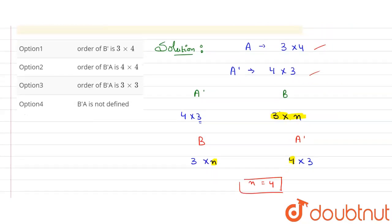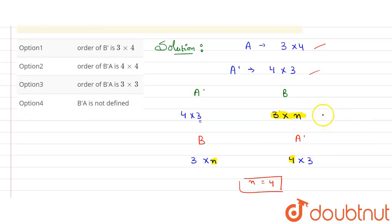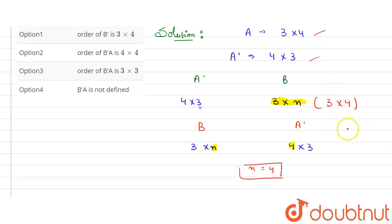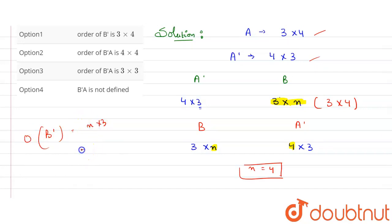The order of B is 3×n, and since n = 4, the order of B is 3×4. Now, the order of B' (transpose of B) will swap rows and columns, giving us 4×3. So the order of B' is 4×3.